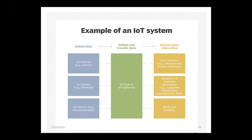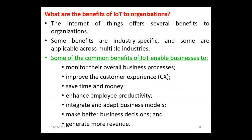An IoT system talks about collecting and transferring data, analyzing that data, and taking action appropriately. A simple example: blood pressure monitoring systems — once upon a time we used to go to doctors only, but today at home I can use it and connect it to my doctor who can see the data. That is the outcome of Internet of Things. The IoT offers several benefits: monitoring overall business processes, improving customer experience, saving time and money, enhancing employee productivity, integrating and adopting business models, making better business decisions, and generating more integrity.